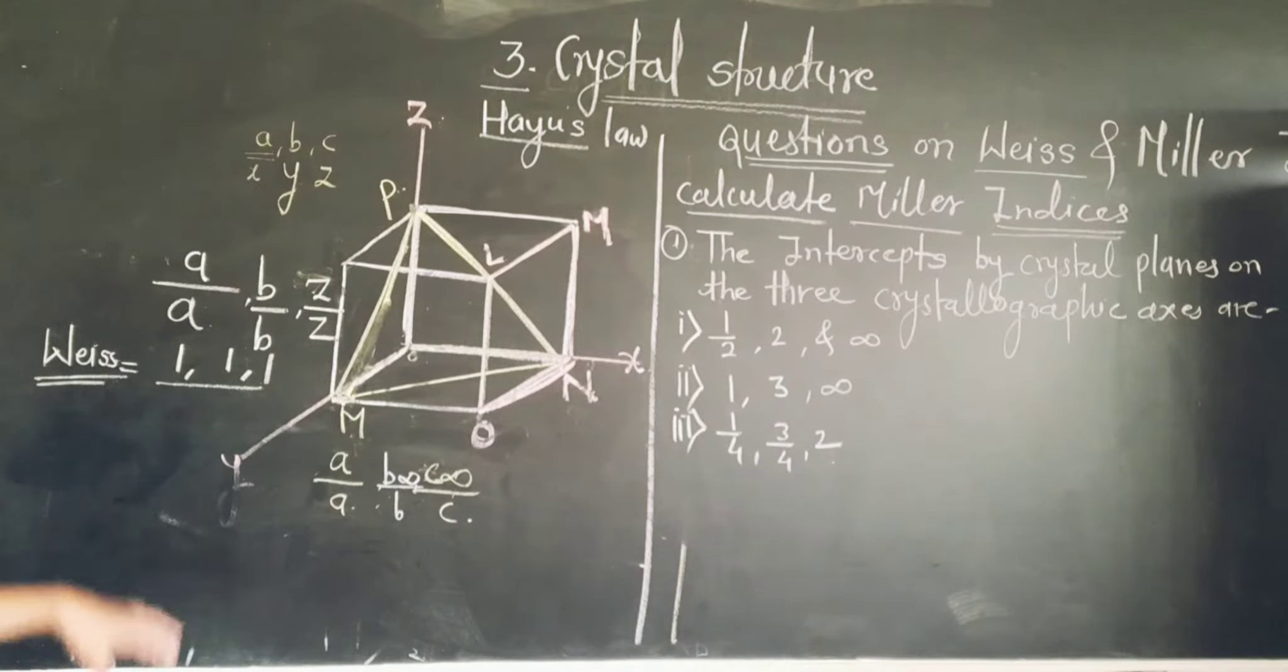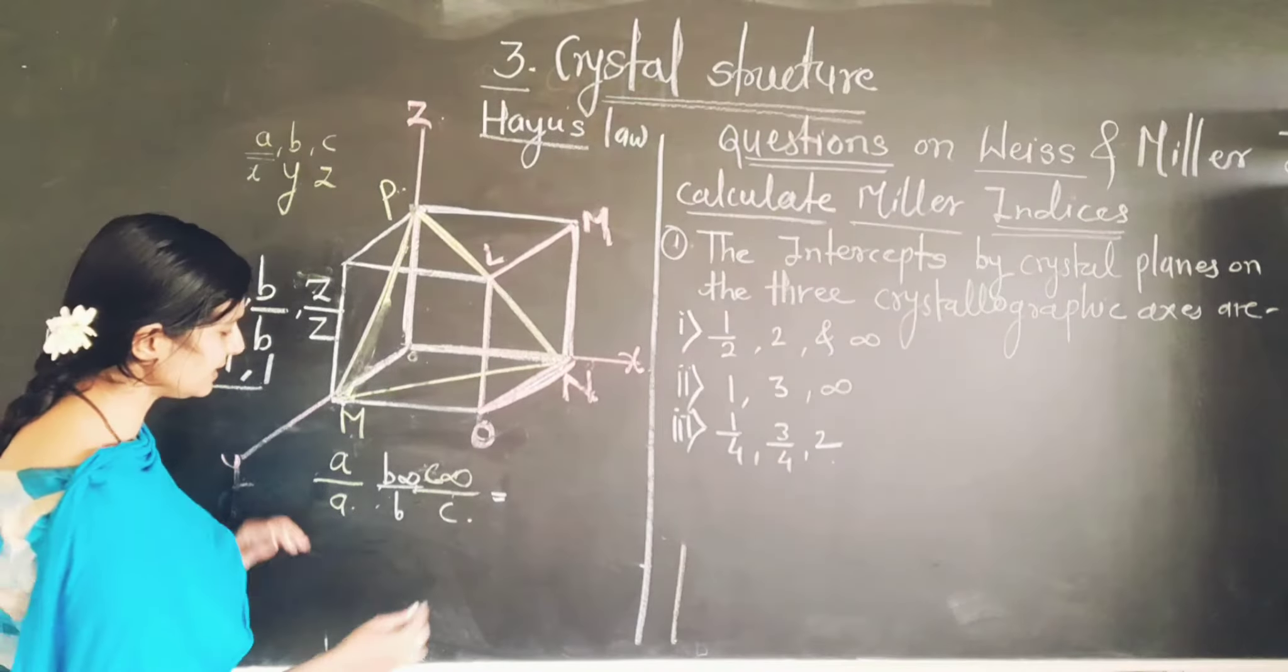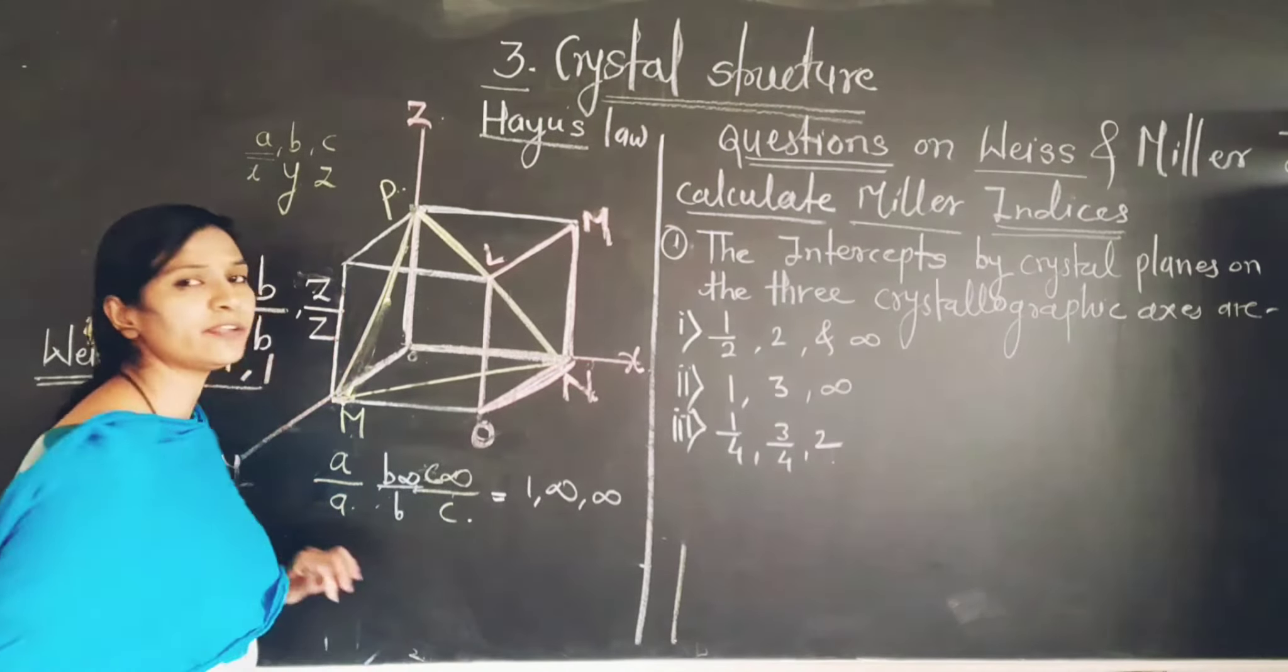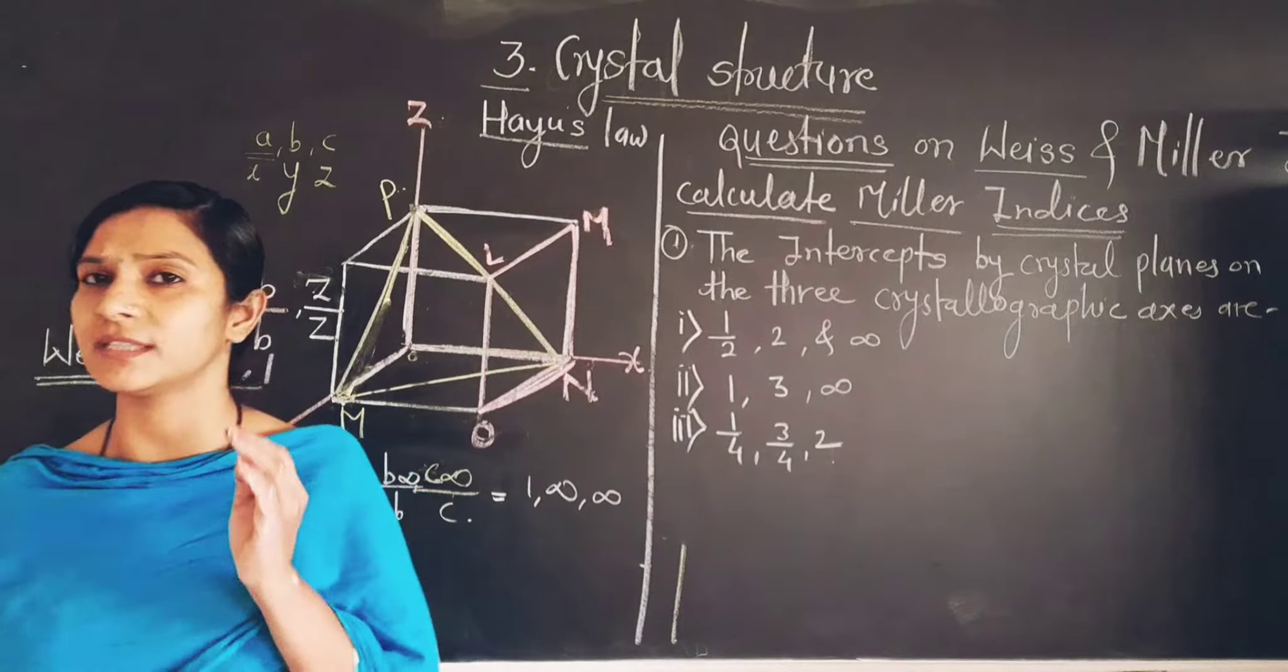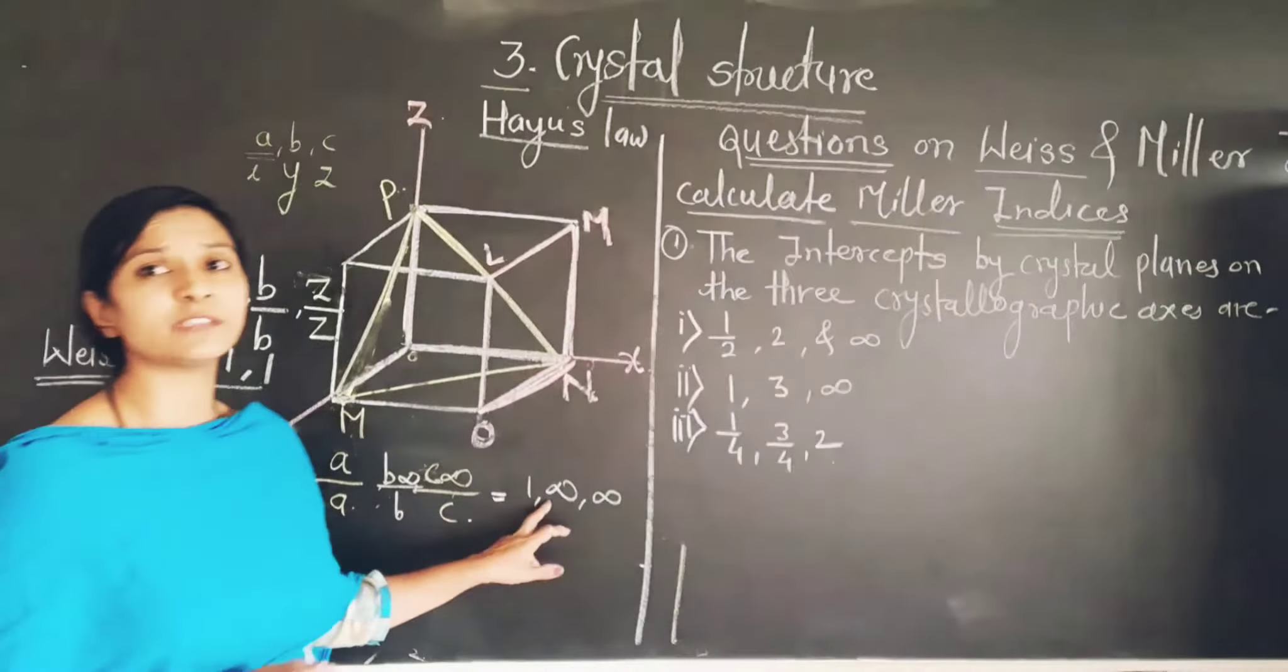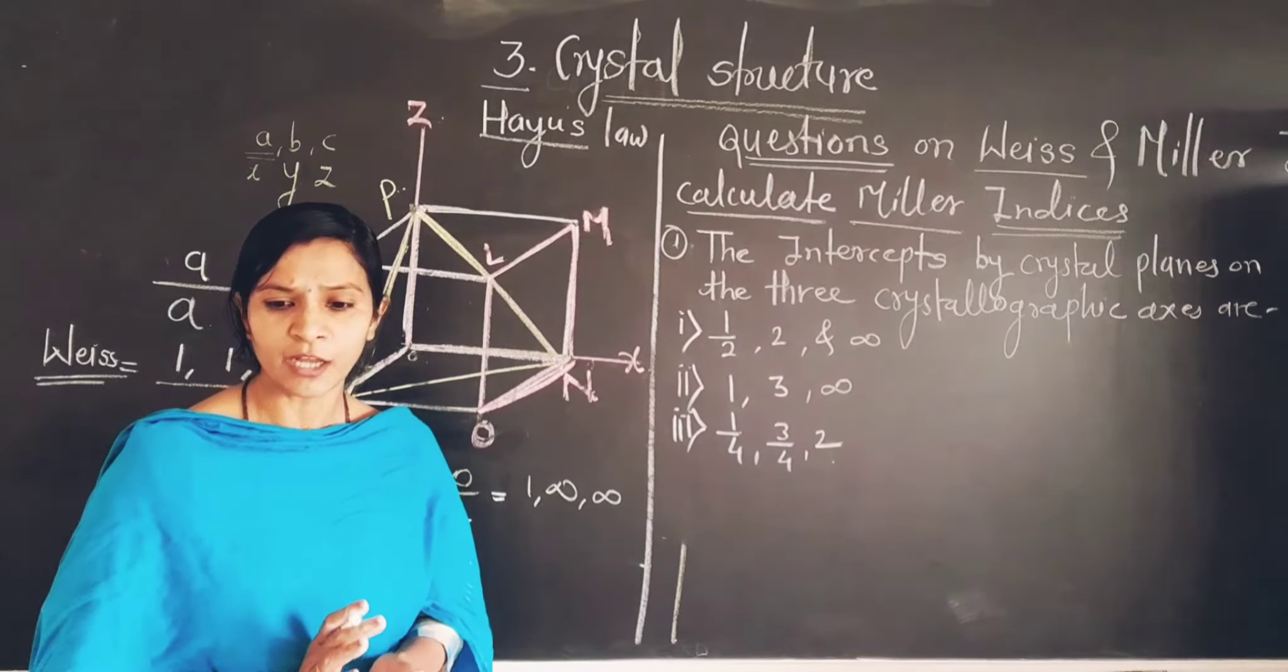And when we simplify as per the rule of Weiss indices, we will get 1, infinity, infinity. So friends, you always remember that if there is any type of infinity given, that time that plane is parallel to that particular axis. So you will be understanding this.